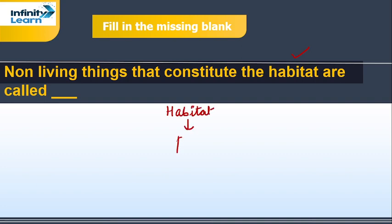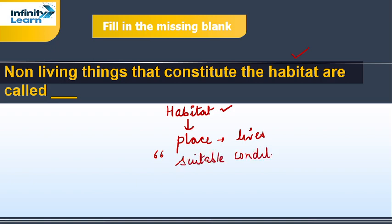An organism survives well in its own habitat because there it gets the suitable conditions required for its survival, which includes food, air, mating partner — everything the organism needs to survive. In habitat, there are two basic components.